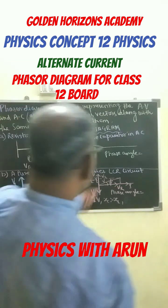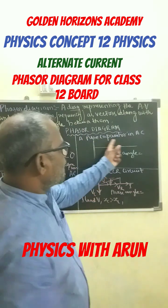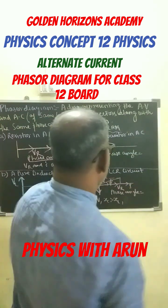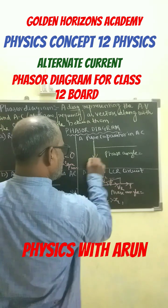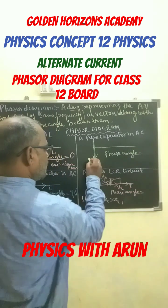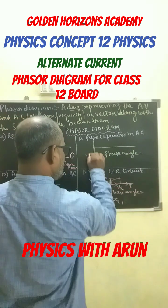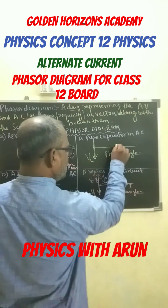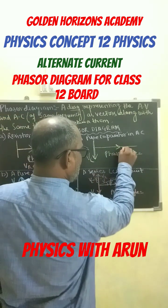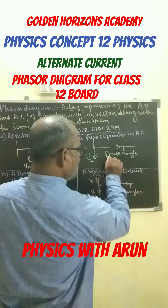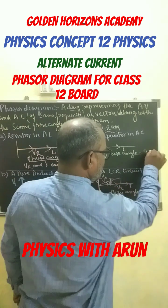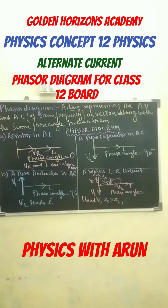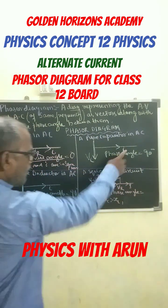Now let's come to a pure capacitor in AC. You can write down here Vc, aur here I. Here the phase angle is 90 degrees.